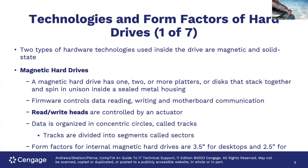Two types of hardware technologies used inside the drive are magnetic and solid state drives. Magnetic hard drives have one, two, or more platters or disks that stack together and spin in unison inside a sealed metal housing. I'm showing you a picture — this is a platter inside a hard drive. At this angle you can kind of see it.